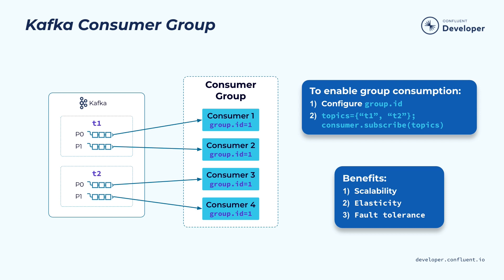The unit of distributing a load is partition. So for a given partition you are subscribing to, we are only going to give that to one of the instances of the consumer in this consumer group. Defining a consumer group is pretty simple — you just need to define a consumer group and then make a subscription to the set of topics that you want to consume.